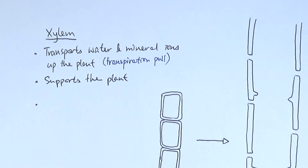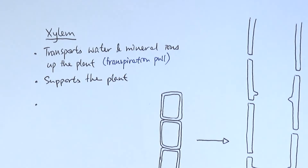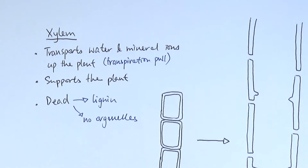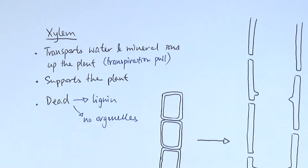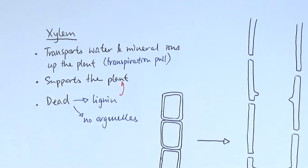Another function of the xylem is to support the plant and keep it upright. The reason for that is because of a very special chemical that is deposited onto the cell walls of the xylem, keeping it rigid — and that chemical is called lignin. Lignin is a woody and waterproof substance that basically strengthens the cell wall of the xylem. The transpiration stream has got a high pressure to it, so without lignin the xylem would not be able to withstand that pressure of water uptake. For lignin to be deposited, the xylem itself needs to be dead.